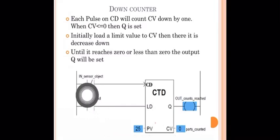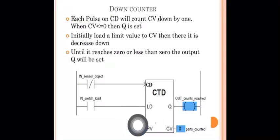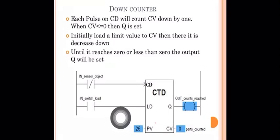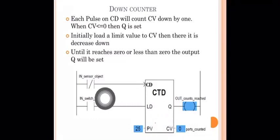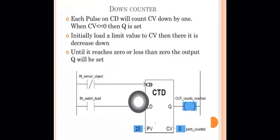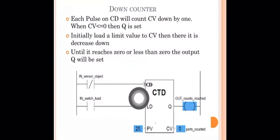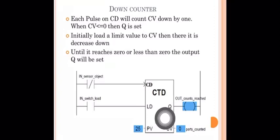Initially CV is 0. When we apply a pulse to the load input LD, the preset value PV is stored into CV. For example, if PV is 25, then CV becomes 25. Each pulse on the CD input decrements CV by one: 25, 24, 23... down to 0. When CV reaches 0, the output Q is set.